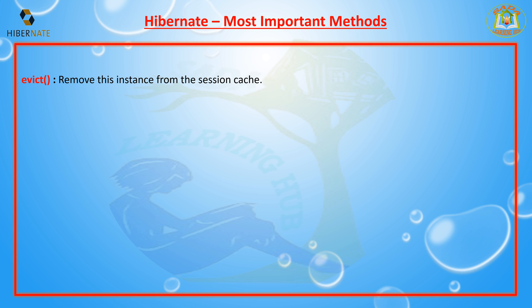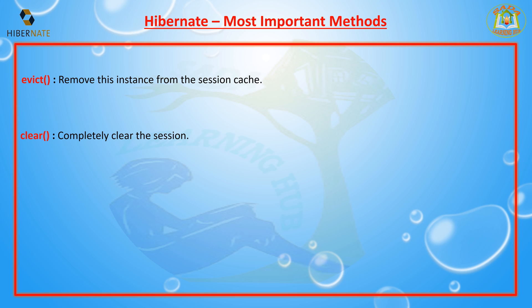The next method is evict. The evict method removes an instance from the session cache — you provide the identifier and evict removes that instance from the session cache. The next method is clear, which completely clears the session.